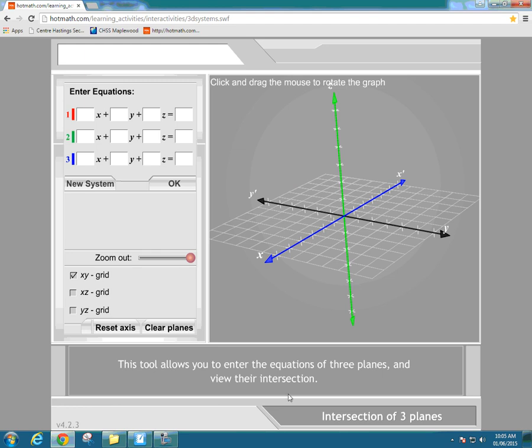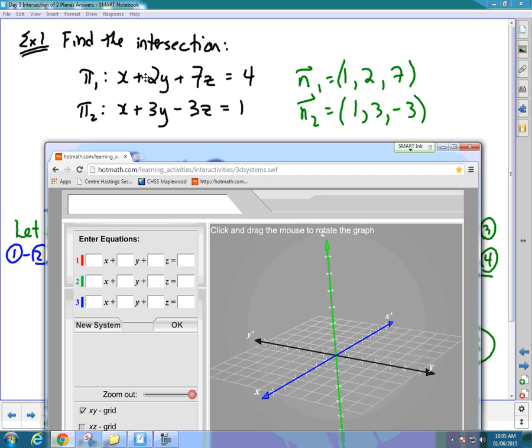What I'm going to do is put in example one that we did a couple videos ago. So this is x+2y+7z=4, and then x+3y-3z=1.